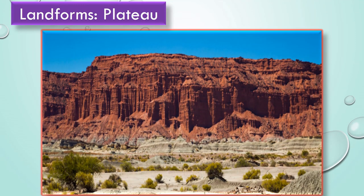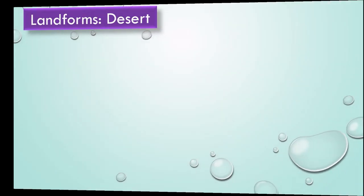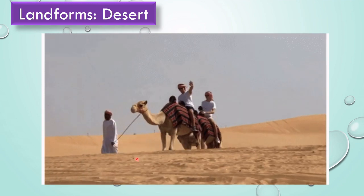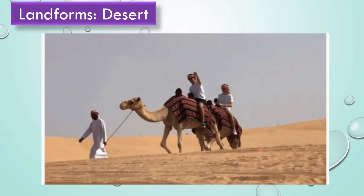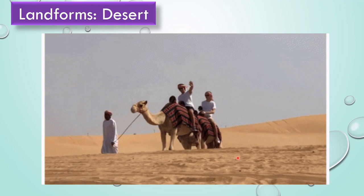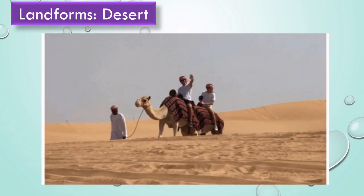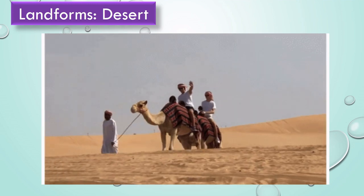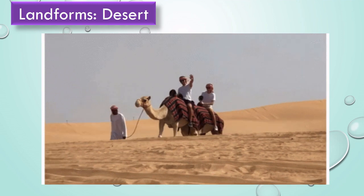Let us learn about plateau. The raised land with a flat top is called a plateau. A plateau looks like a table top. Let us see about desert. In desert, we can find sand. So the large areas of land covered with sand is called desert. Deserts have very less water and less number of people. Camels are used to travel in deserts.